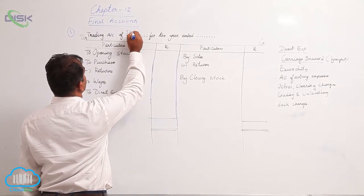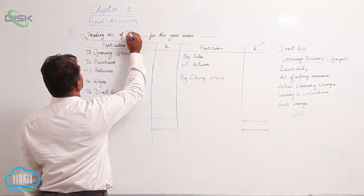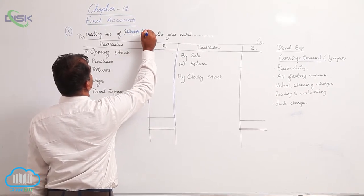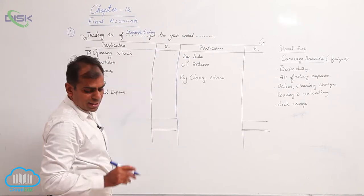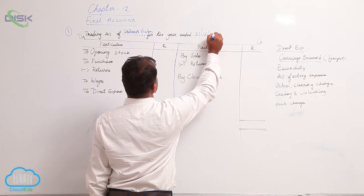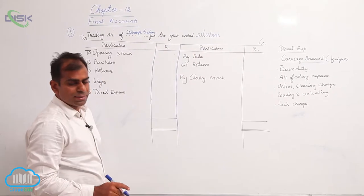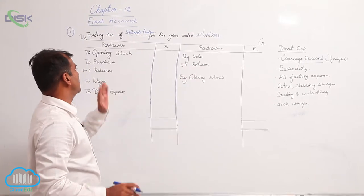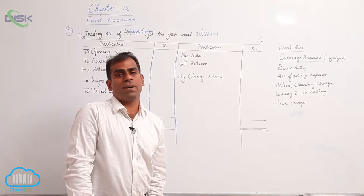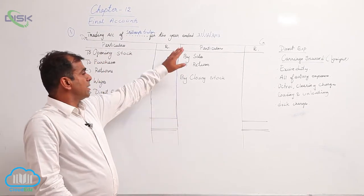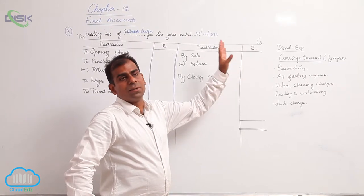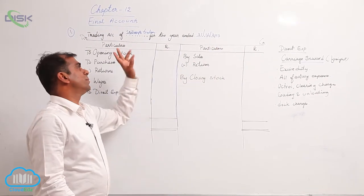Further, year ended it was 31-12-2013. This is how you mention. Now first you are given stock on 1-1-2013. We are preparing the trading account for the year ended 31-12-2013, so stock on 1-1-13 would be your opening stock. So I am writing 9500 against opening stock in your format.